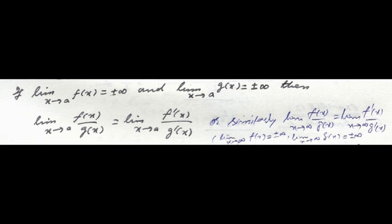Also, we can convert the indeterminate form of the type infinity over infinity into the type 0 over 0.